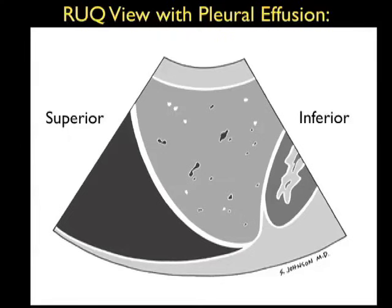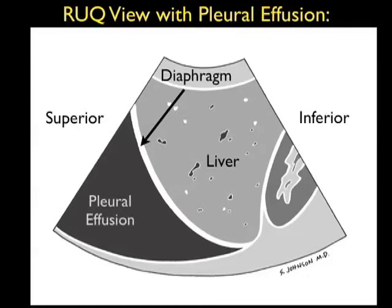Here's an illustration showing a positive examination from the right upper quadrant view with a pleural effusion above the diaphragm. We're in a long axis configuration, so superior to the left and inferior to the right. The liver is in the middle of the image, and the diaphragm — the white line — is seen right above the liver. Notice in this image we have a pleural effusion represented by the dark area of fluid immediately superior to the diaphragm, extending up into the thoracic cavity. This will be the signature finding of a pleural effusion from the trauma FAST views; the left upper quadrant will have a similar view, looking above the spleen.